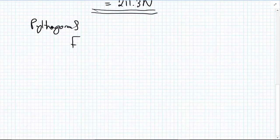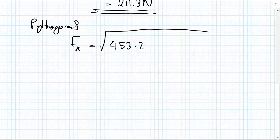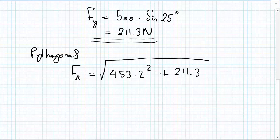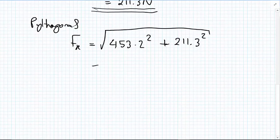So Fr, my resultant vector, will be equal to the square root of 453.2 squared plus 211.3 squared. I put that into my calculator and that is indeed 500 newtons. Okay.